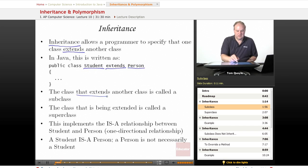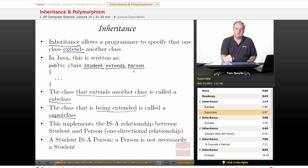The class that extends another class is called a subclass. So in this case student would be the subclass. The class that is being extended is called a superclass. In this example that is the person class that is acting as the superclass. This implements what's known as the is-a relationship between student and person. We say that student is a person.